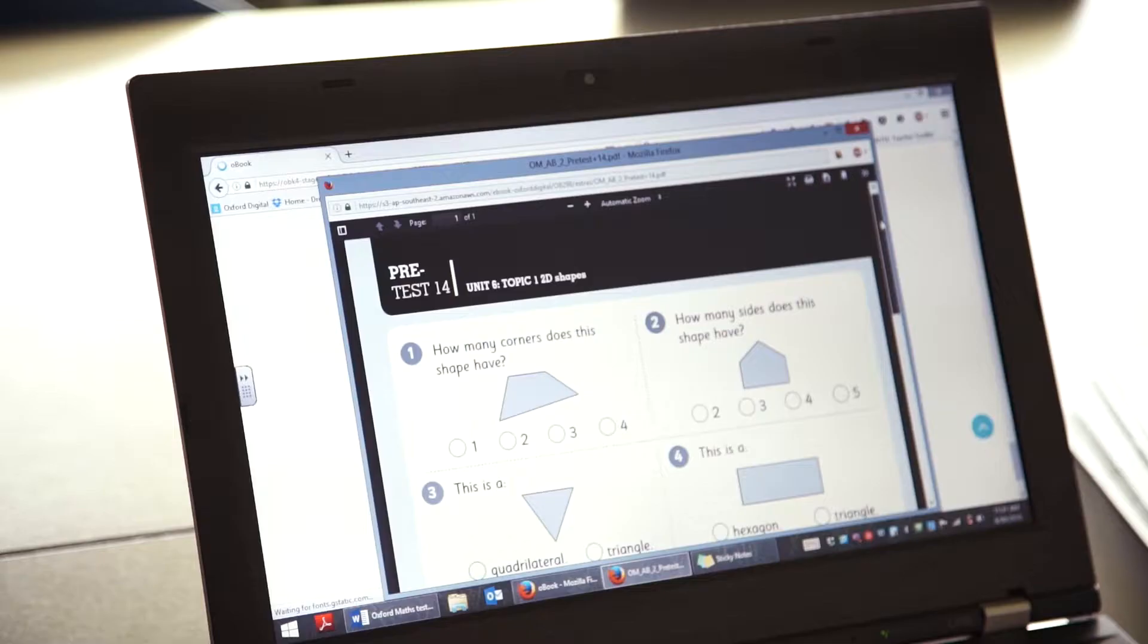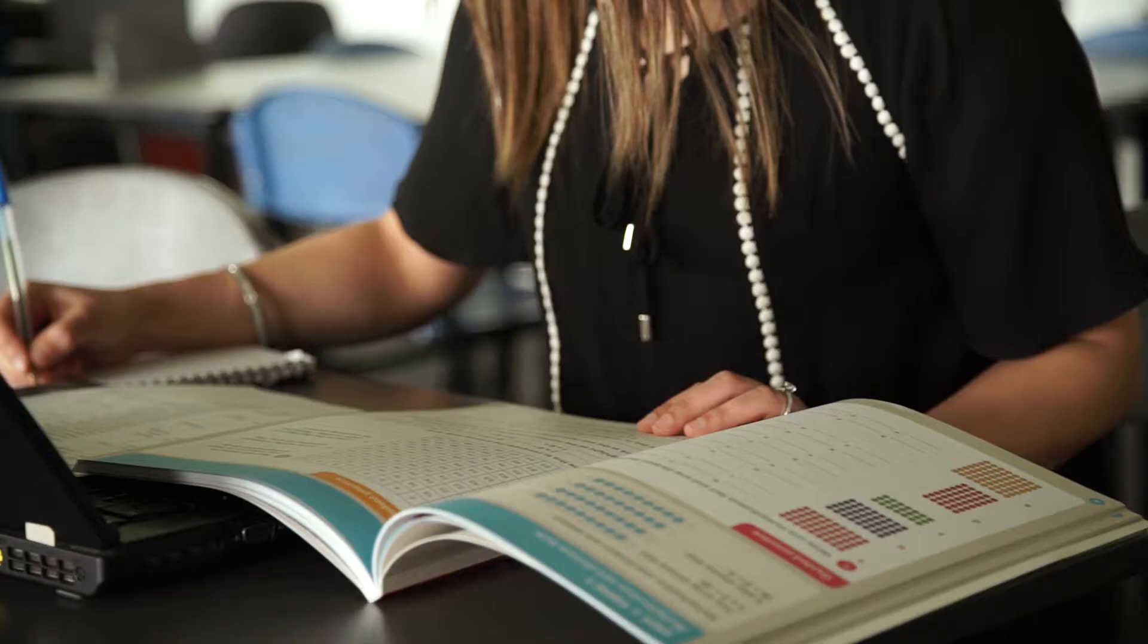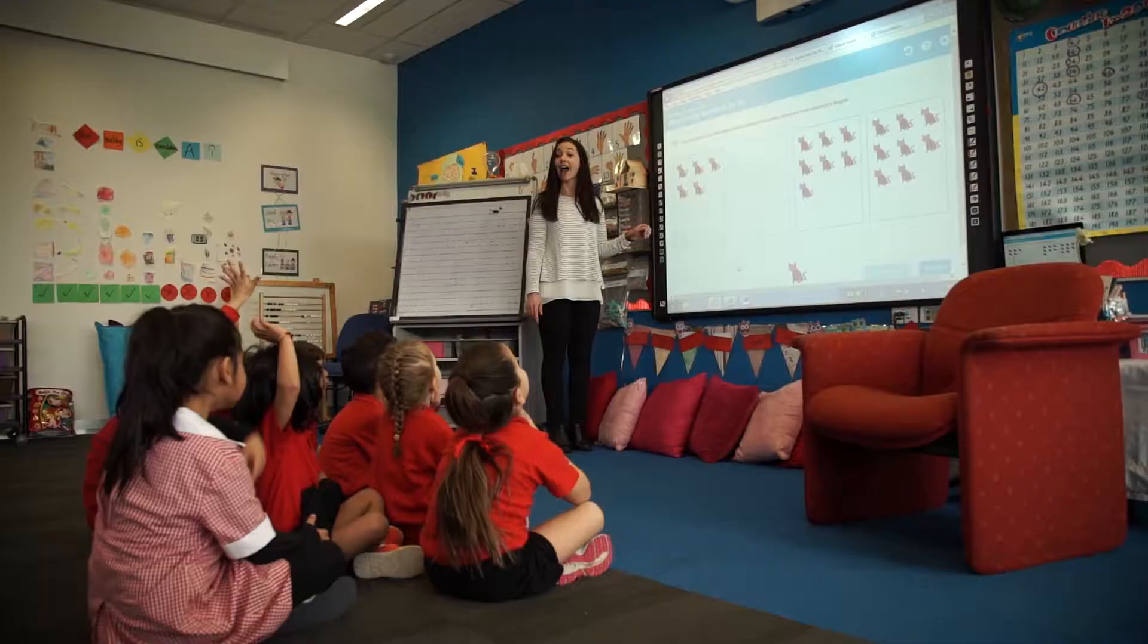Oxford Maths is a comprehensive differentiated maths program that can be used from foundation to year six. Differentiation is key to ensuring that every child can access the curriculum at their point of need.